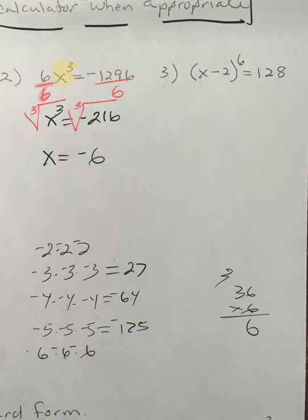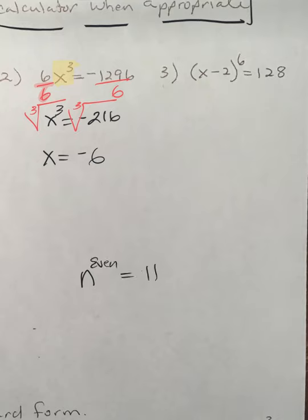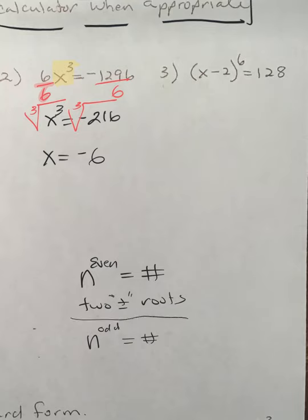So you could say: if you have an even power and you're trying to undo it, there should be plus and minus roots. And if you have an odd power and you're trying to solve, there would just be one real root.